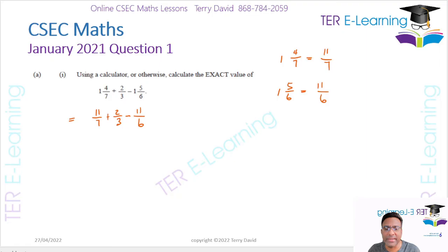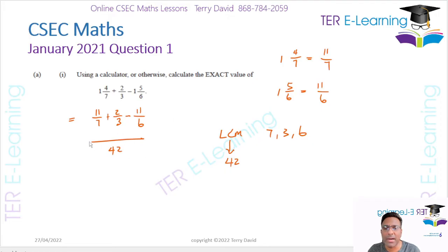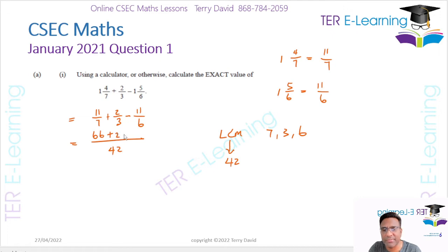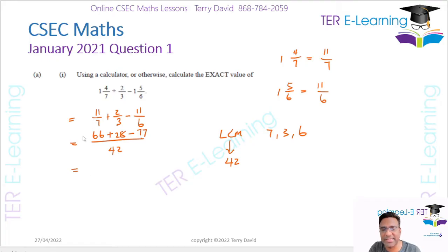Now we need to find the LCM of 7, 3, and 6. The LCM is 42. So 7 into 42 is 6; 6 times 11 gives me 66. Then 3 into 42 is 14, and 14 multiplied by 2 gives me 28. Then 6 into 42 is 7; 7 times 11 is 77. So the numerator is 66 plus 28 minus 77, which gives me 17.